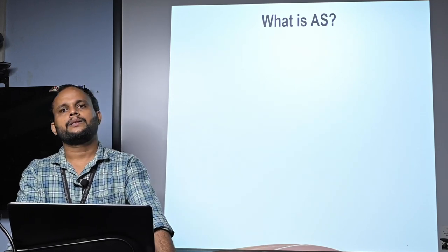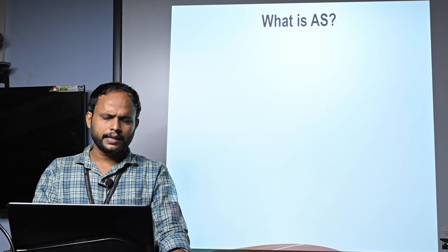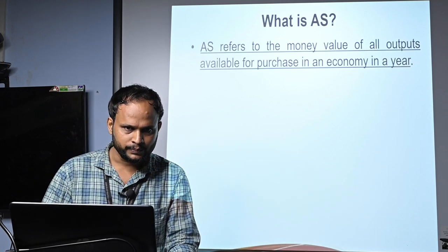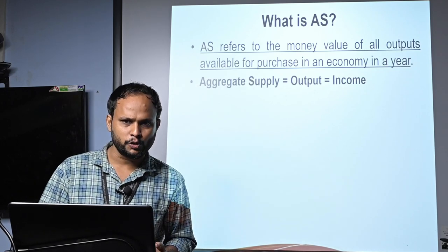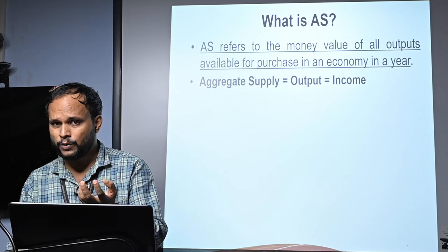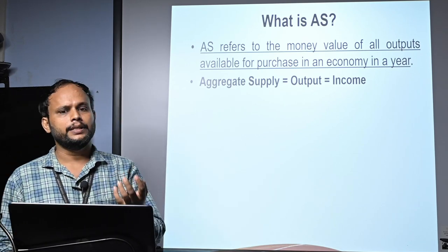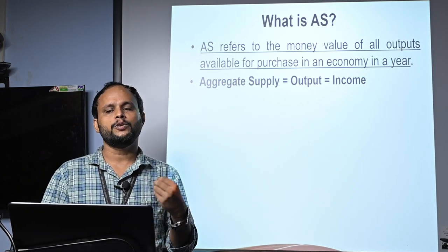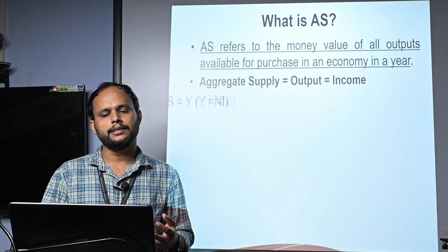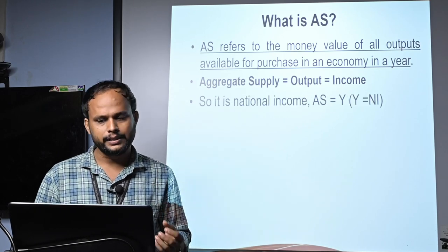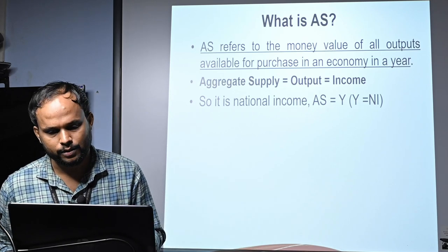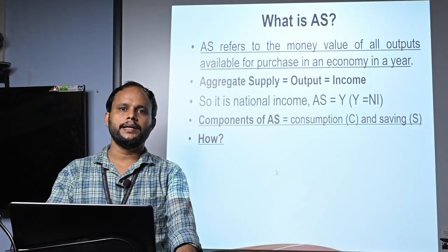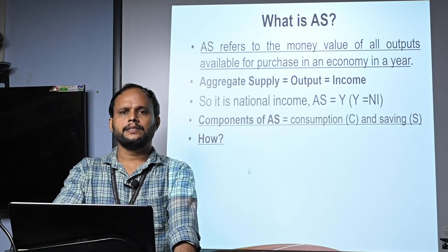Aggregate supply is the sum total of all output produced in an economy during a reference period. Aggregate supply equals total output of an economy, as well as the income of an economy. If you convert the produced output into monetary terms it will be national income, so aggregate supply equals national income. The components of aggregate supply are consumption plus savings.